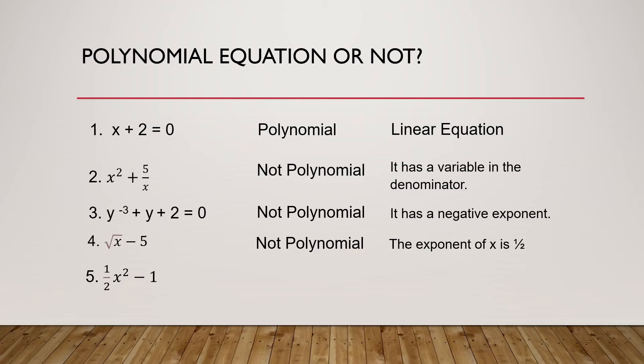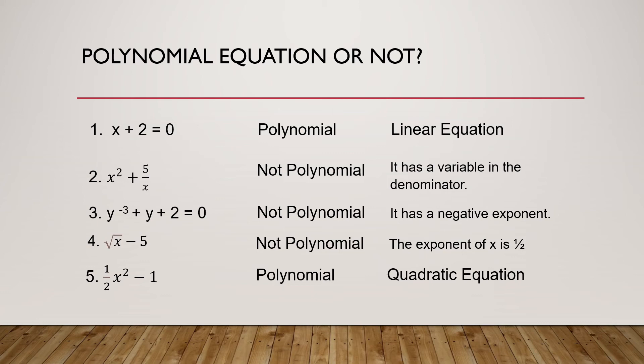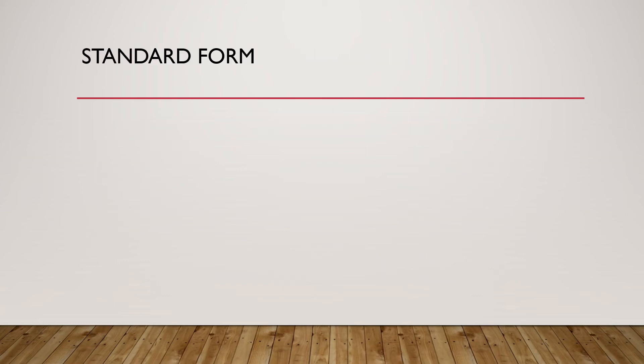For the last number, we have 1 half x squared minus 1. This one is a polynomial equation and it is an example of a quadratic equation. Now, let us try to write a polynomial equation in standard form.